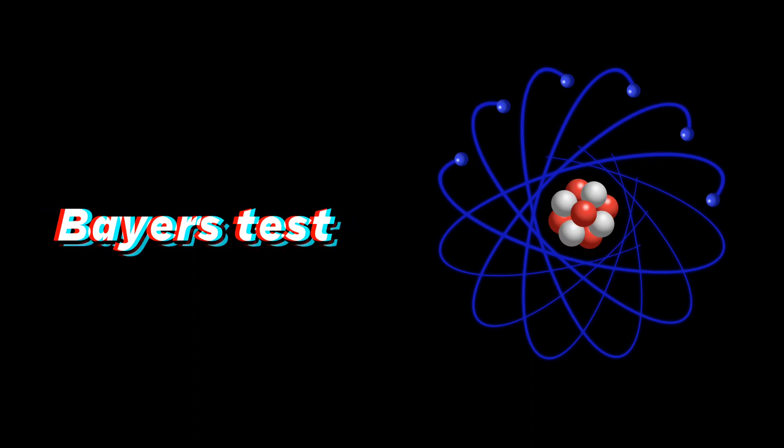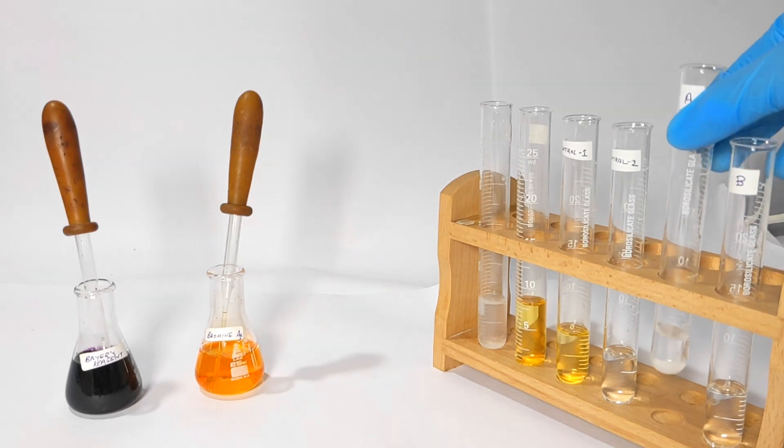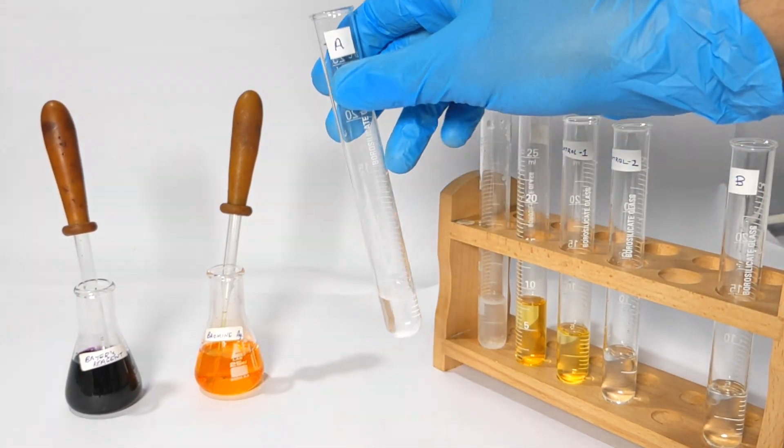The second test is the Bayer's test. It involves the use of Bayer's reagent. So what is Bayer's reagent? It is an aqueous solution of potassium permanganate containing an alkali like sodium hydroxide.